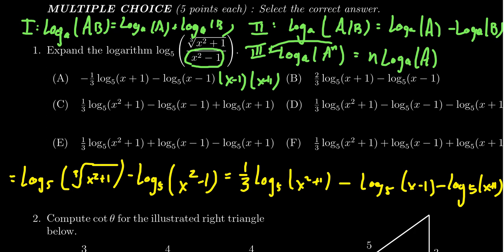So this is our expanded form. We're going to get one-third log of x squared plus 1 minus the log of x minus 1 minus the log of x plus 1. And so that leads us to choose option D.